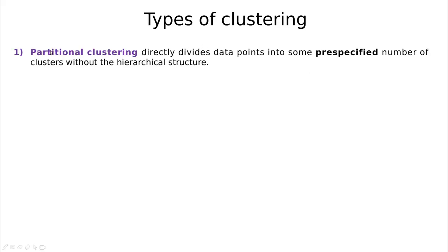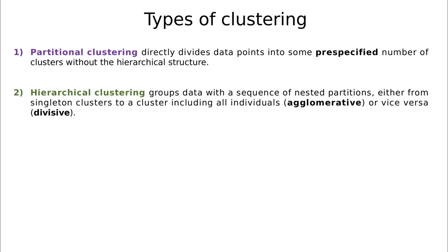We have different approaches to doing clustering. The most popular one is called partitional clustering, in which we try to divide data points into some pre-specified number of clusters. For instance, you could say I want five clusters or three or seven or whatever, and the task is how to create those clusters in the most efficient way.